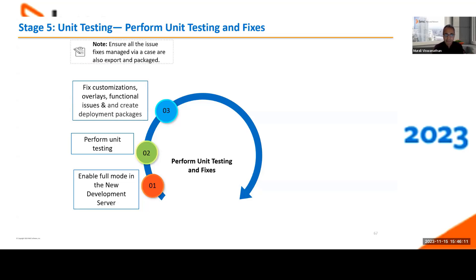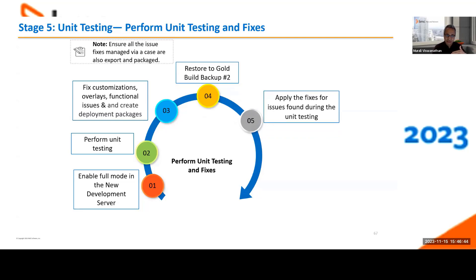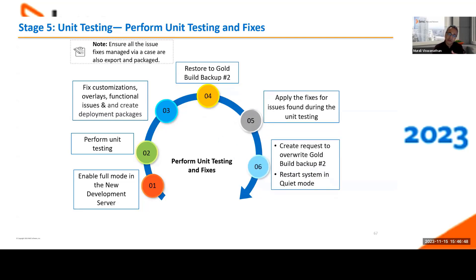Fix any issues found and package them through the Deployment Console as deployment packages. This is how you'll promote changes and fixes from dev to QA and dev to pre-prod during the UAT cycle. We strongly encourage you to practice that during unit testing as well. Also, don't forget to include any BMC-supplied fixes in those packages. Once unit testing is complete and you have your packages, go back to a state with no test data — reapply the fixes from your packages, and take a golden backup to override the previous one. This gives you a clean state with all your fixes applied and your data migrated.